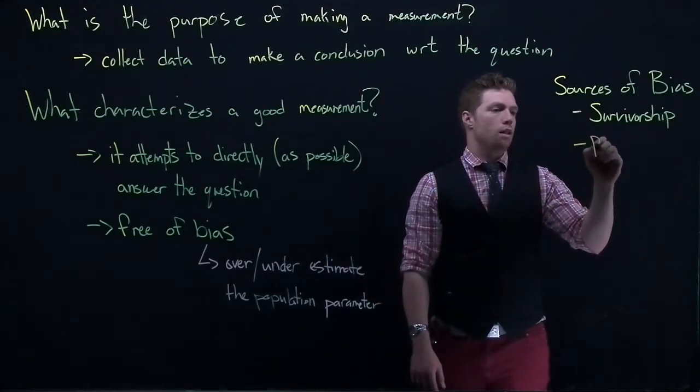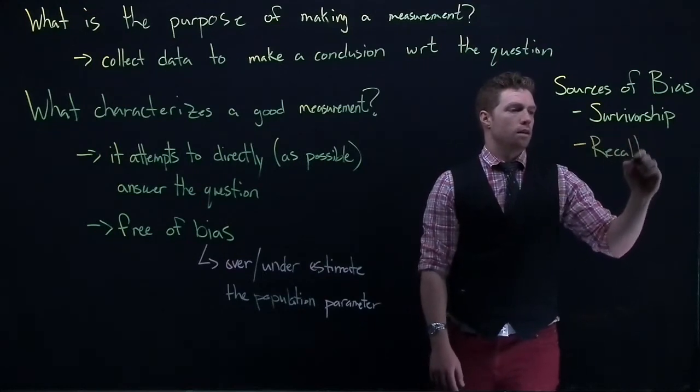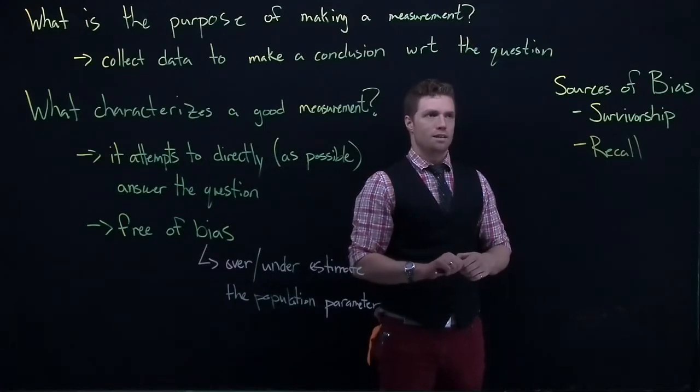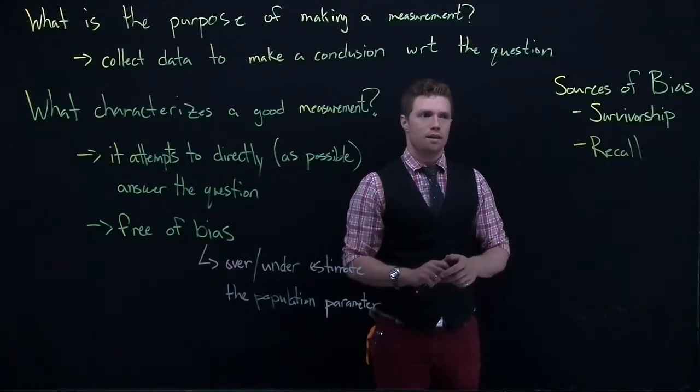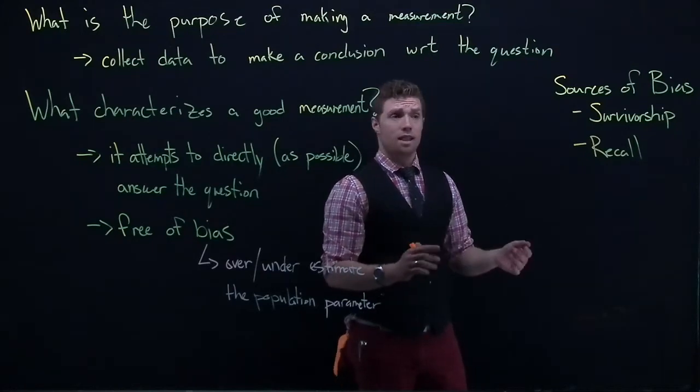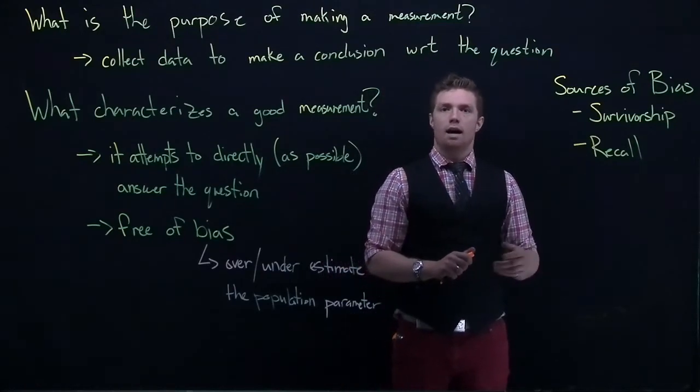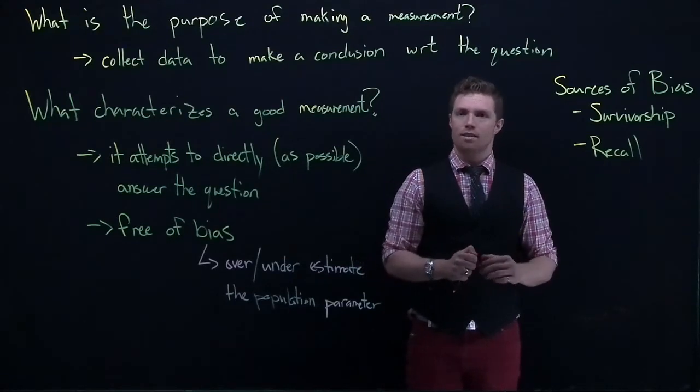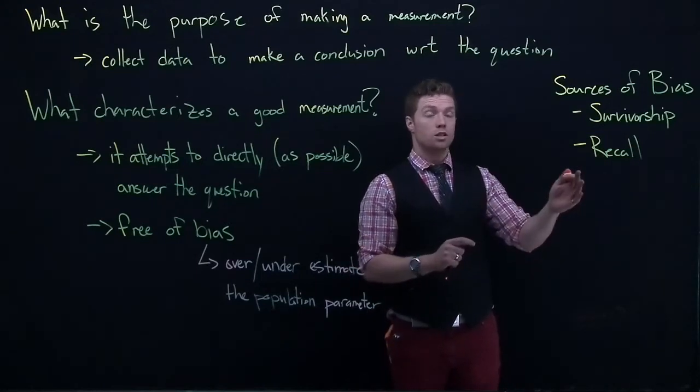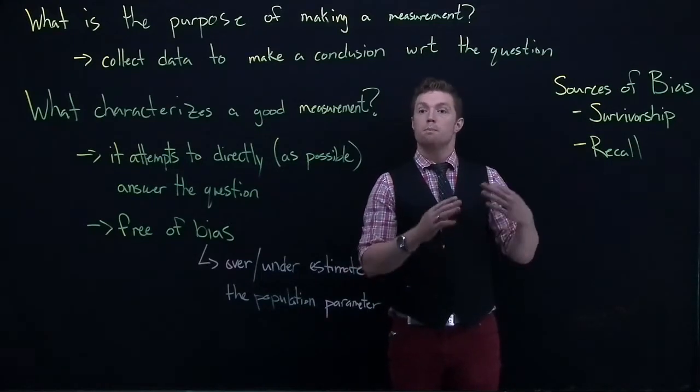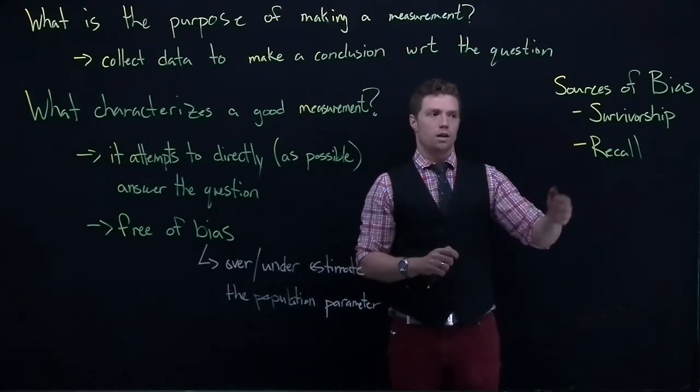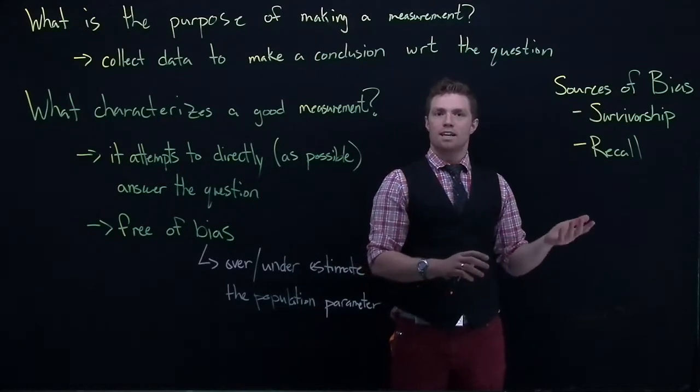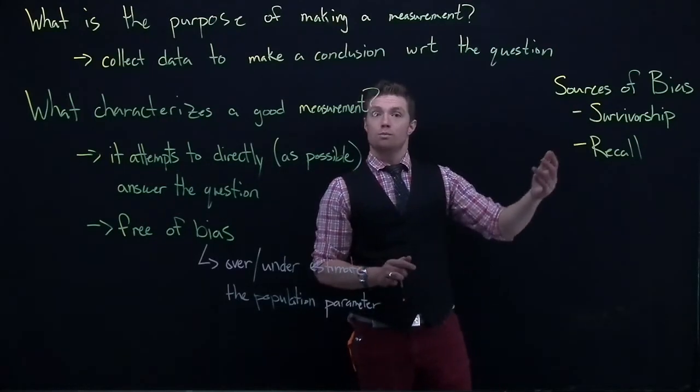Okay. Another one is called recall. So recall bias happens a lot in surveys. Like you ask people to remember how many times they ate or drank soda in the past week or how long they slept. You're asking people to recall how much they actually know. And the unfortunate thing is humans are actually terrible at having this really good memory of exactly what happened. If you really wanted to know, you'd set up an experiment where you measure this as they're going along instead of having people recall. And so you see that people tend to overestimate good habits and underestimate bad habits. And that's where we get some recall bias.